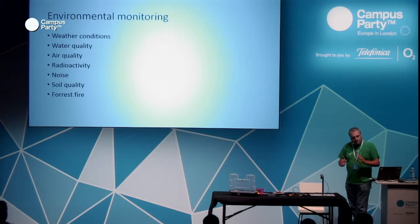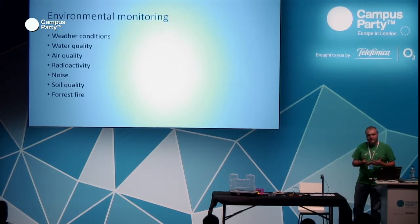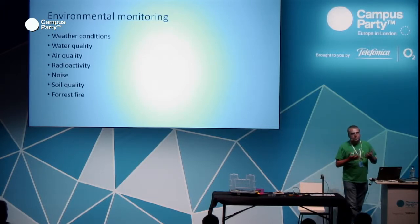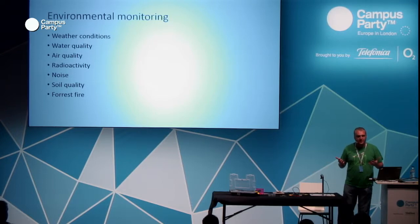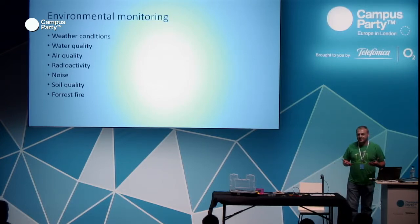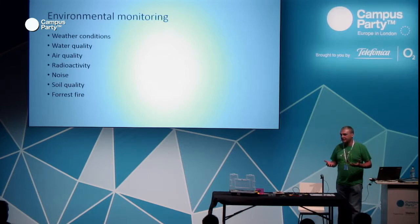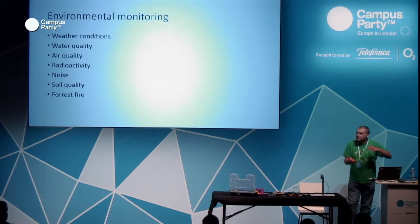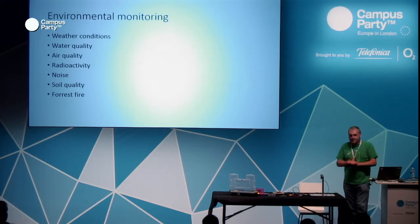The typical thing you do with Internet of Things is monitor the environment. You can monitor weather conditions, water quality — the easiest way to monitor water quality is using a light sensor to know how dark the water is. You can also monitor air quality.